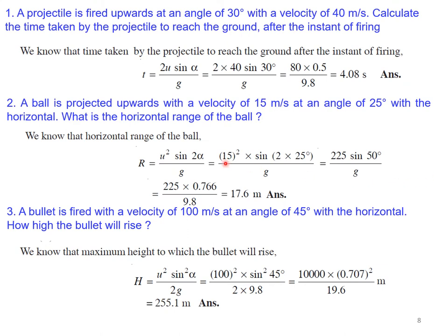Problem 1: A projectile is fired upwards at 30° with a velocity of 40 m/s. Calculate the time of flight. Using T = 2u·sin(α)/g = 2 × 40 × sin(30°) / 9.8 = 4.08 seconds.